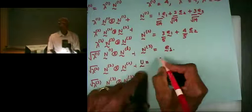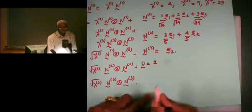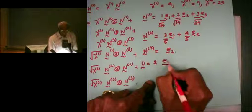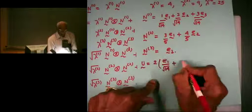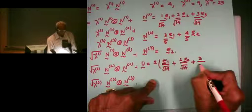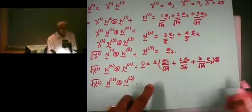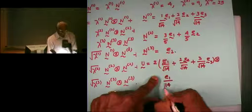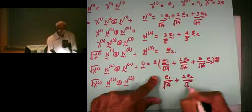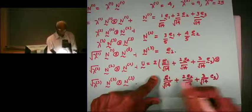So U: square root of lambda-1 is 2. Remember, you're going to take positive values — stretches are positive. So it's twice N1, which is E1 over square root of 14, plus twice E2 over square root of 14, plus 3 over square root of 14 times E3. And plus the other two terms.